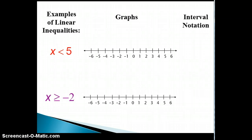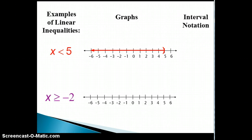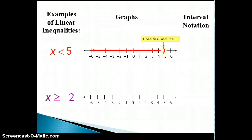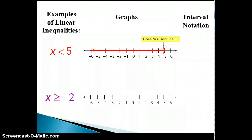Recall that the first inequality says that x is any real number strictly less than 5. We show this with an arrow pointing from 5 toward all numbers less than 5, which are the numbers to the left of 5. Since 5 is not included in this set, we put a parenthesis at 5. You can think of it as getting really close to 5, but never actually reaching 5, as the parenthesis curves away from 5.